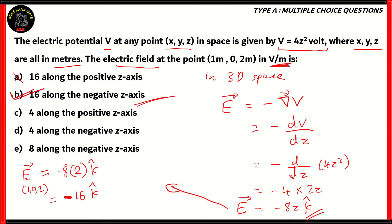Options A and C are incorrect because they indicate the positive z-axis. Options D and E are incorrect because the numerical value of the electric field is wrong. When dealing with electric potential and electric field in 3D space, we differentiate the formula of the electric potential to get the electric field, then apply the coordinates to get the value at any particular point.